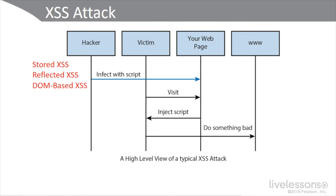These are well-known attacks and you can use organizations like OWASP and download their prevention cheat sheet — we have some good resources there. Looking at this diagram, the hacker is on the far left infecting a victim's web page with a script. Typically the data gets into the web application through some untrusted source like a web request, and the data is included in dynamic content sent to the web server, which is not validating it.